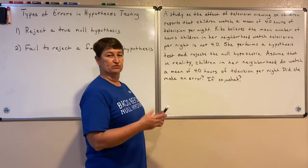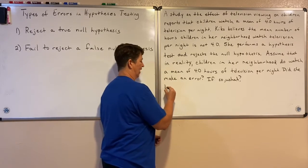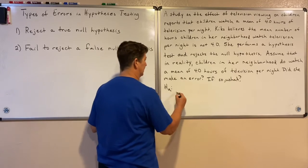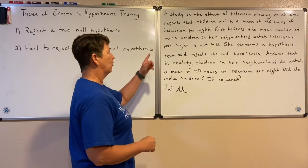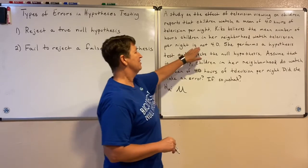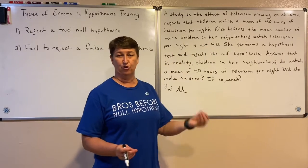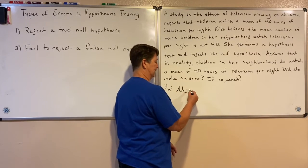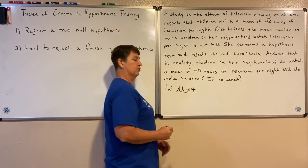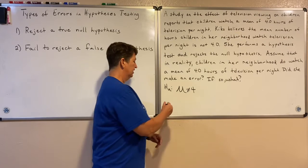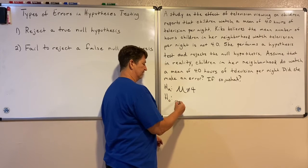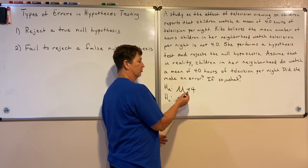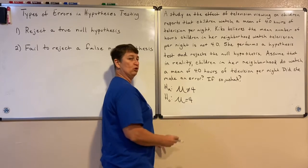Let's review what we know. Kiko had an alternative hypothesis — she thought the mean number of hours children in her neighborhood watch is not four. Notice she doesn't say greater than or less than; she just says it's not four. So mathematically, the mean is not equal to four. That's her alternative hypothesis. For the null hypothesis, it's the opposite mathematical statement, and it always includes equality — so here the null is that the mean equals four.